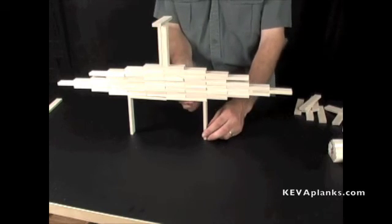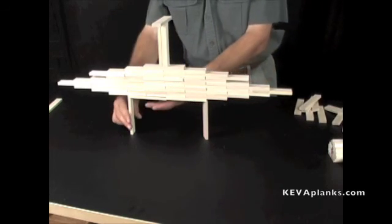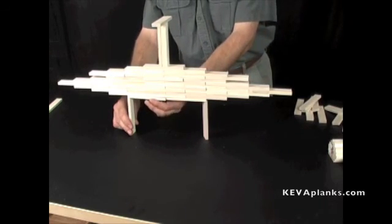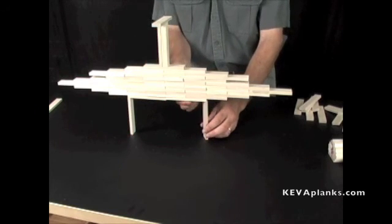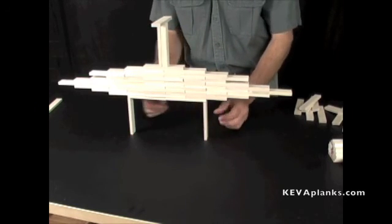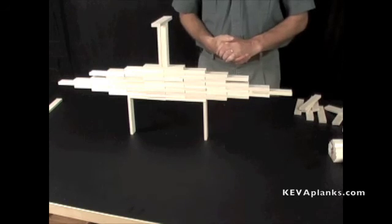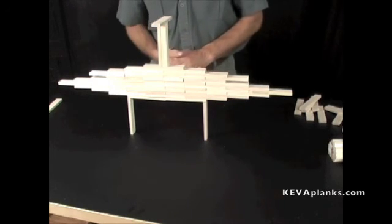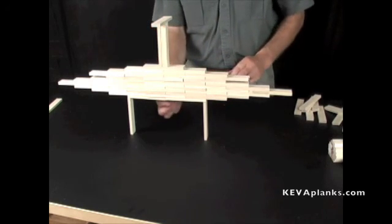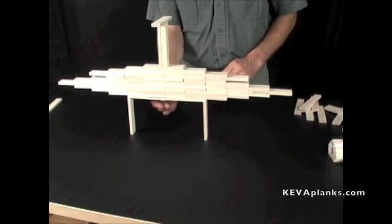Now, normally you would want uprights to be turned in a little bit and that would make it more stable. But in this case, I think it looks a little bit more elegant to have it like that. So that's how you do what I call an impossible structure, because it would seem impossible to do that if you didn't know the trick.